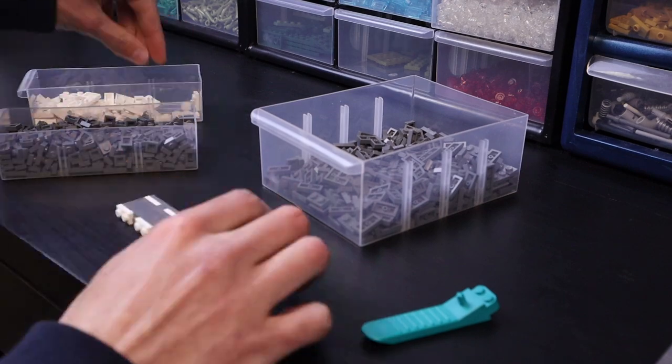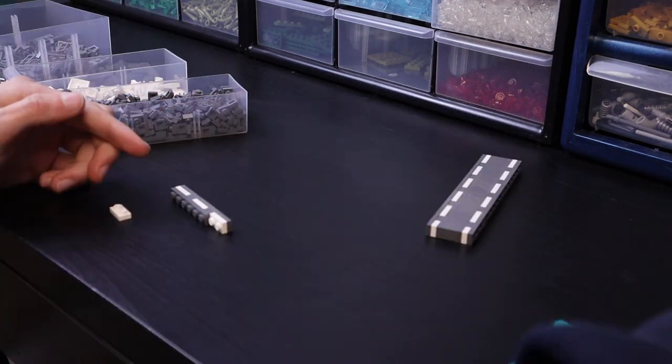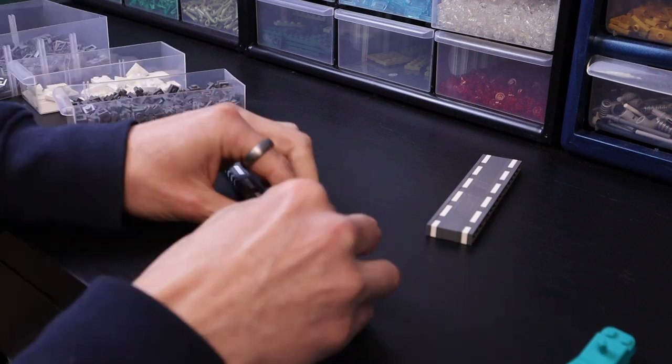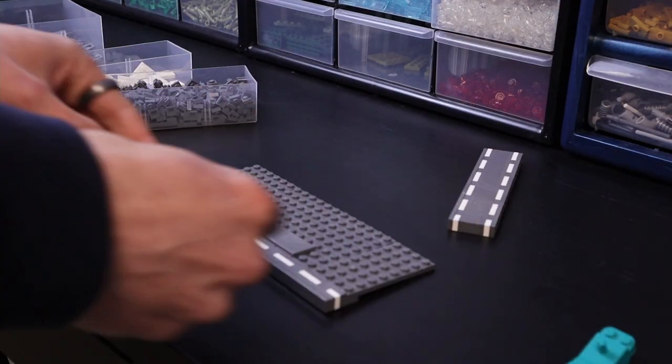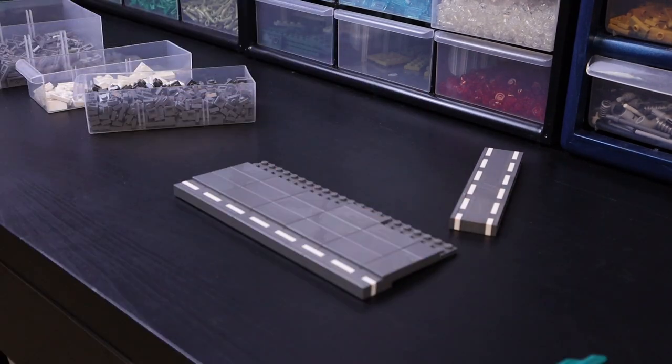So the first thing that I built was the walkway that Obi-Wan and Darth Maul are going to be fighting on. This is built with SNOT technique, which is studs not on top, mostly plates and tiles and then bricks in the middle. And then moving on to the floor section, I did some more plates and tiles attached with brackets to some regular plates, and then tiled off everything there.